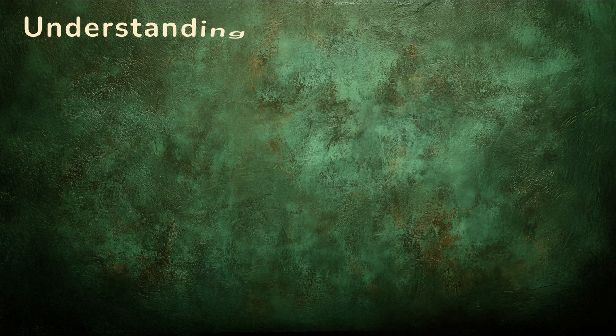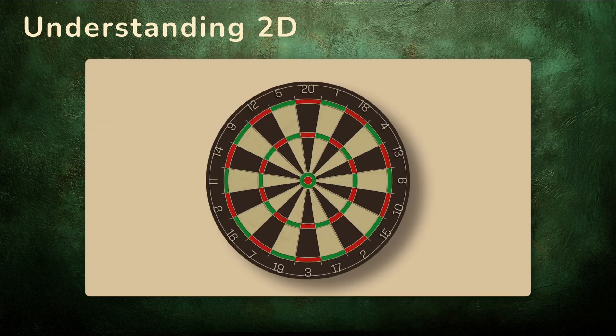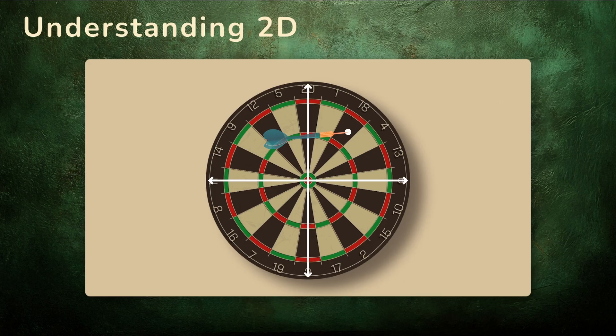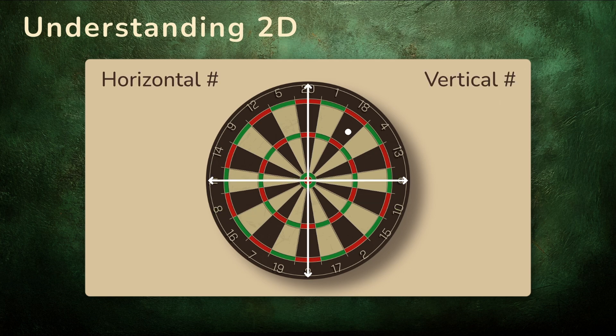Let's return to our dart game, which requires math in 2D. With darts, the location of each throw is described by two numbers. How far left or right it lands, and how far up or down. So one number for the horizontal, and one number for the vertical.